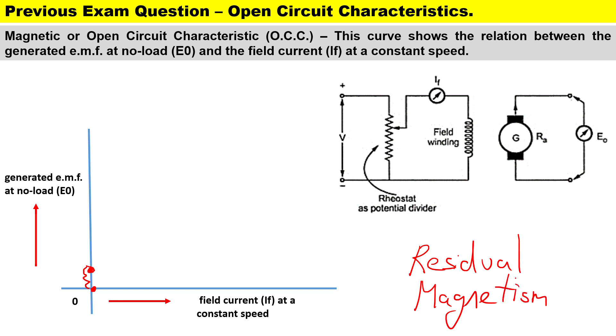For our open circuit characteristic it will represent the relationship between EMF and the field current. It's sort of like a linear relationship but at some point it starts to taper off. So you could actually go ahead and plot the relationship between the field current and the EMF. At some point it does become saturated. Let's take a look at the exam type question.